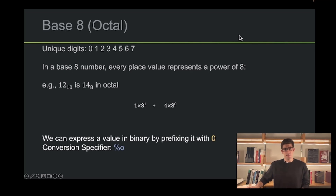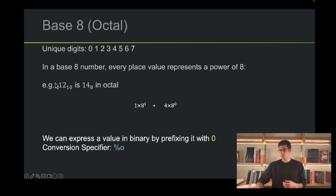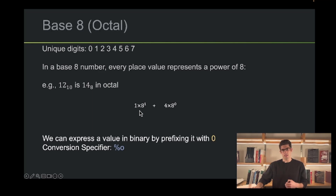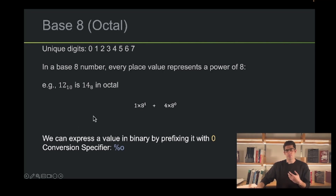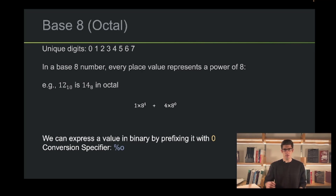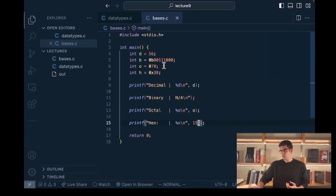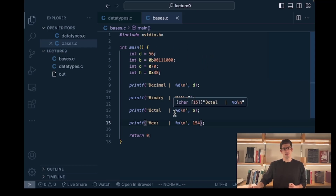Now let's move into octal, or base 8. Base 8 has 8 unique digits ranging from 0 to 7, and in base 8 every number place corresponds to a power of 8. So 12 in decimal corresponds to 14 in octal — we can express 12 as 4 times 8^0 plus 1 times 8^1, which is 8 plus 4, equaling 12. We can express a value in octal by prefixing it with 0, and to print a value in octal we use the %o conversion specifier. In VS Code, we're expressing 56 in octal as 070, and printing it out with %o.